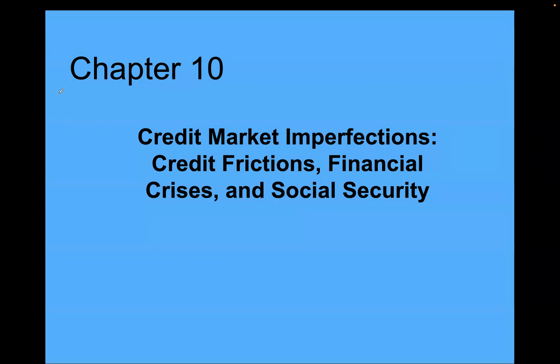Chapter 10. We're going to study credit market imperfection — different types of market imperfection and how these affect the credit market and eventually consumers' consumption and saving decisions, as well as some welfare implications.